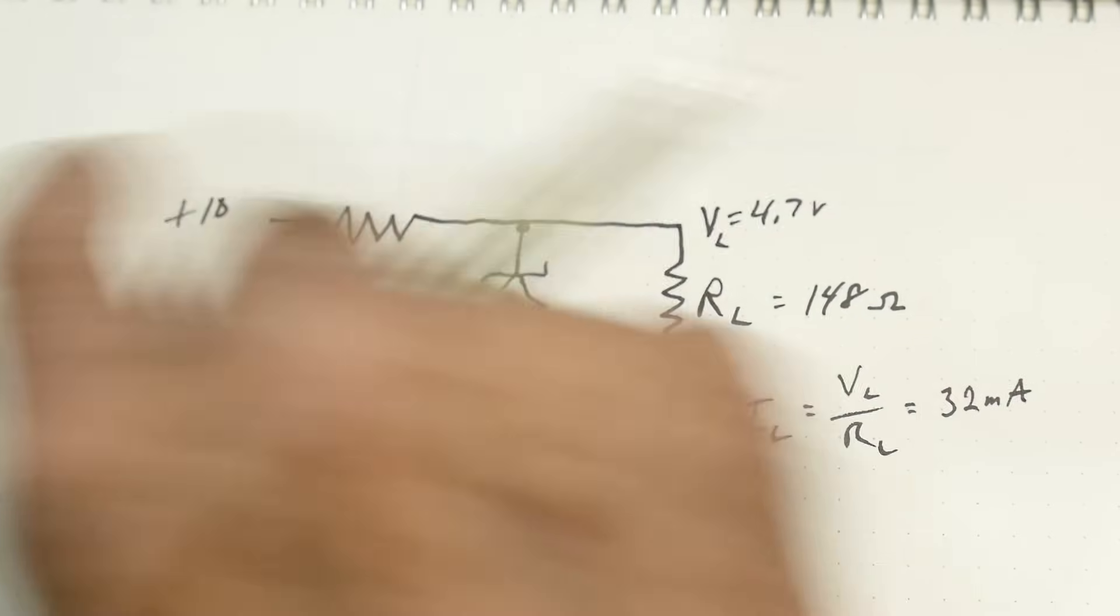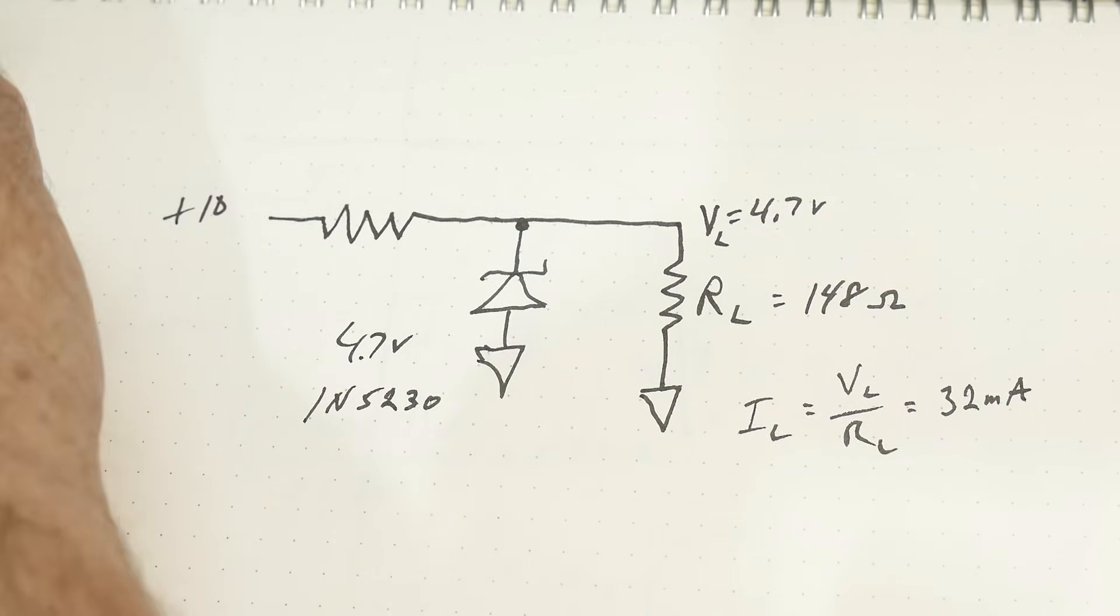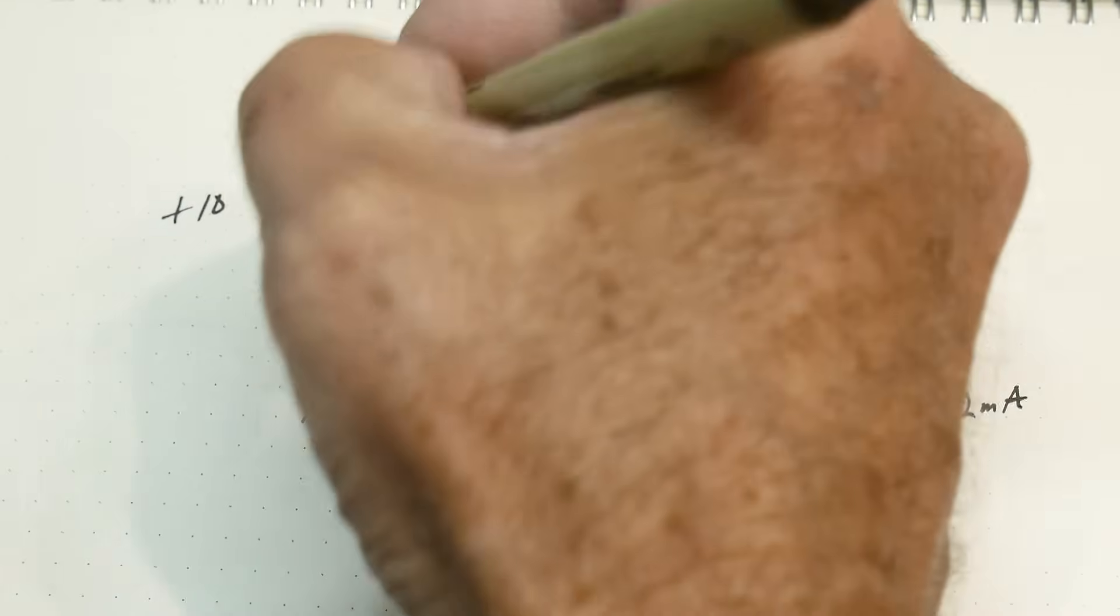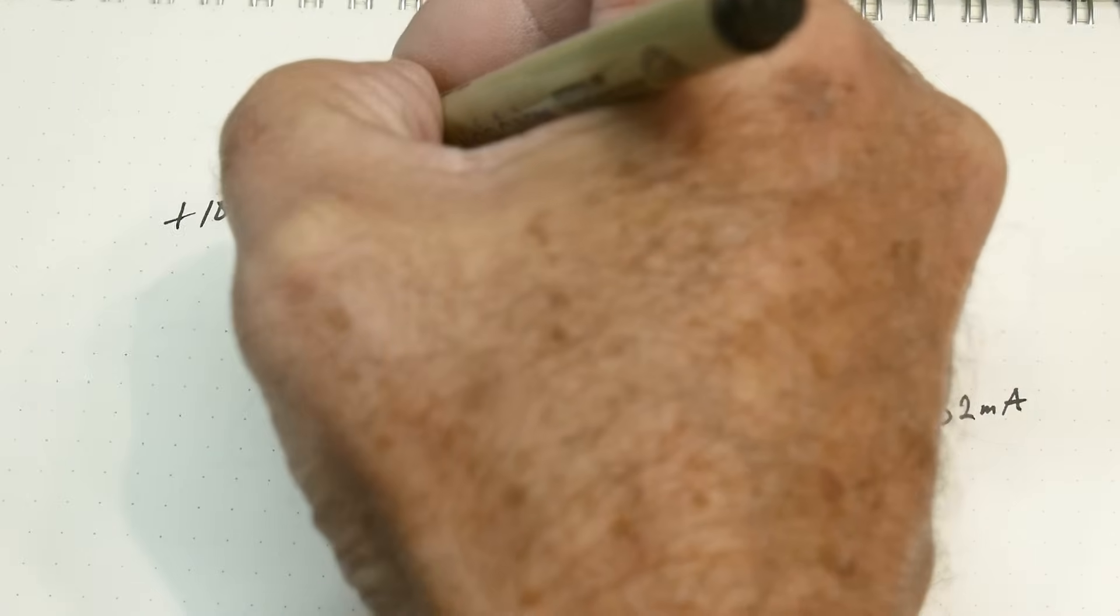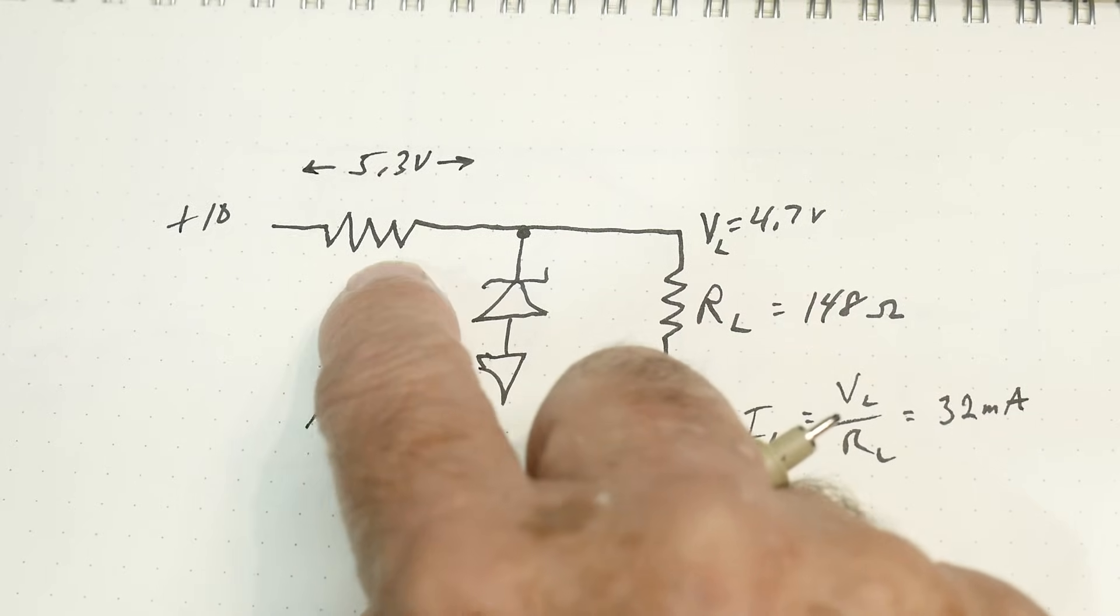And that's going to be dropped across here. So if we have 10, 4.7 subtract. So we have across the resistor 5.3 volts across the resistor.